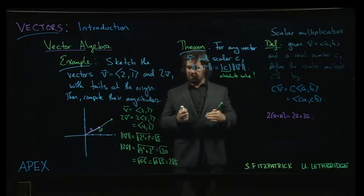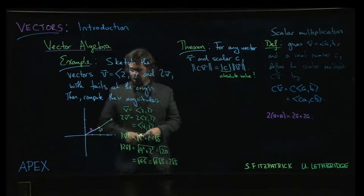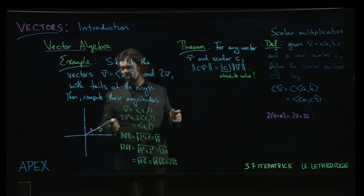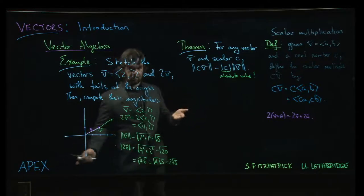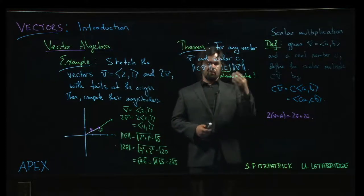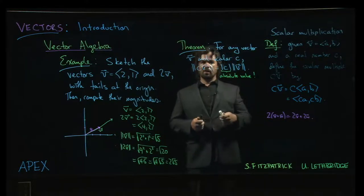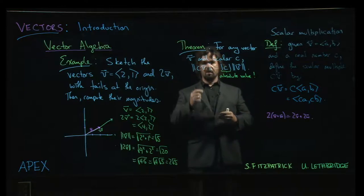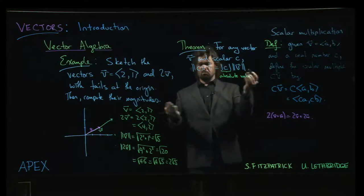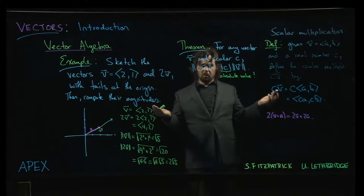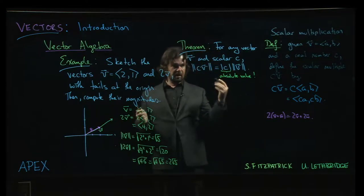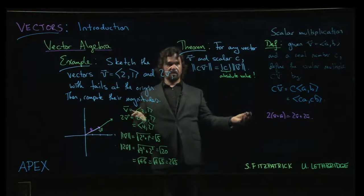It changes the length, changes the magnitude without really affecting the direction, with the exception of negative scalars, because then you point the opposite direction, right? But still along the same line. So let's see why this works. Now that absolute value is there because magnitude is always a positive quantity, and if c happens to be a negative scalar, the two sides couldn't be equal. So we want to make sure that both sides of the equation are positive. We want to address the fact that scalars can also be negative.